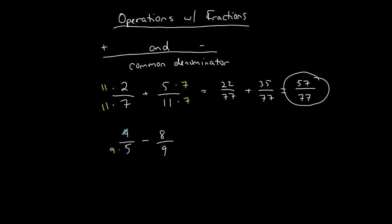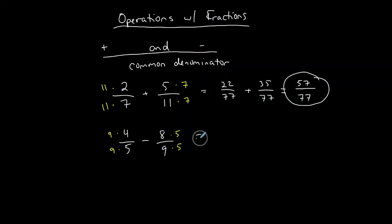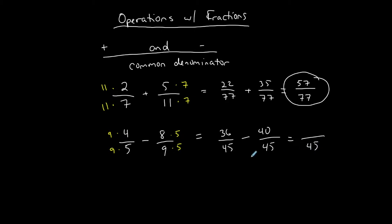So I'm going to multiply this fraction by nine — whatever I do to the bottom I do to the top. Multiply this one by five — whatever I do to the bottom I do to the top. So: four times nine is 36 over nine times five which is 45, minus eight times five which is 40 over nine times five which is 45. Now they have that common denominator and I can combine the two fractions. I keep the denominator the same — I do not subtract or add the denominator. I work the top: 36 minus 40 is negative four. That's my difference.